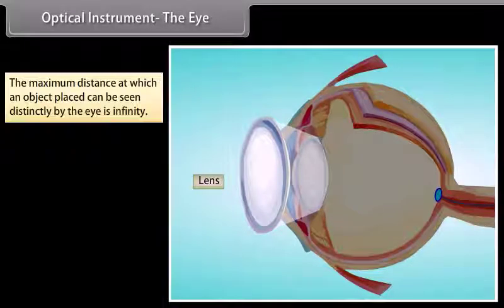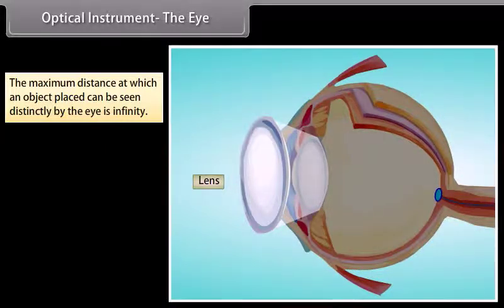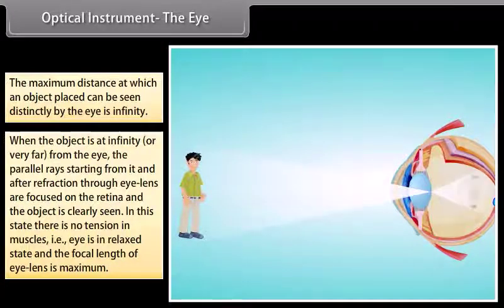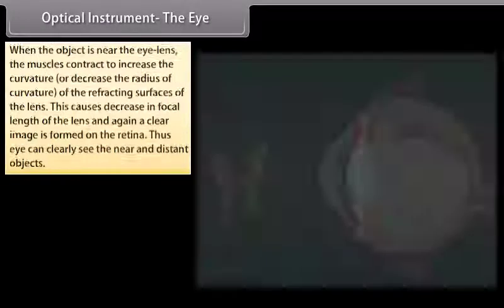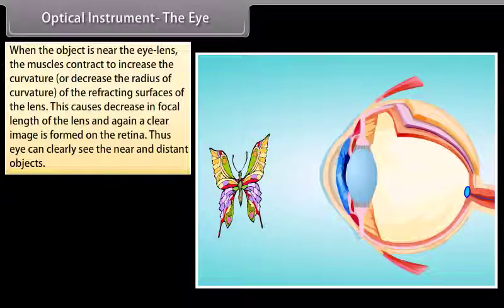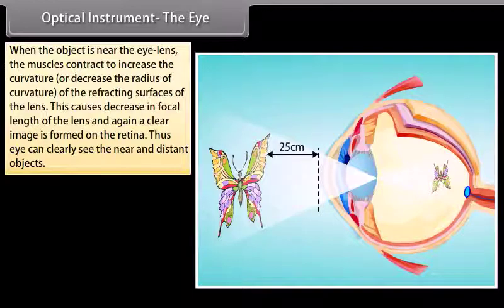The maximum distance at which an object can be seen distinctly is infinity. When the object is at infinity, parallel rays after refraction through the eye lens are focused on the retina. In this relaxed state, there is no tension in the muscles and the focal length is maximum. When an object is near the eye lens, the muscles contract to increase curvature and decrease the radius of curvature of the refracting surfaces, causing a decrease in focal length so that a clear image is again formed on the retina.